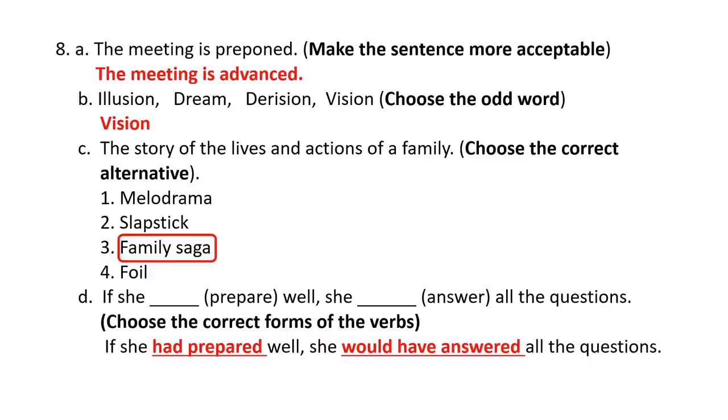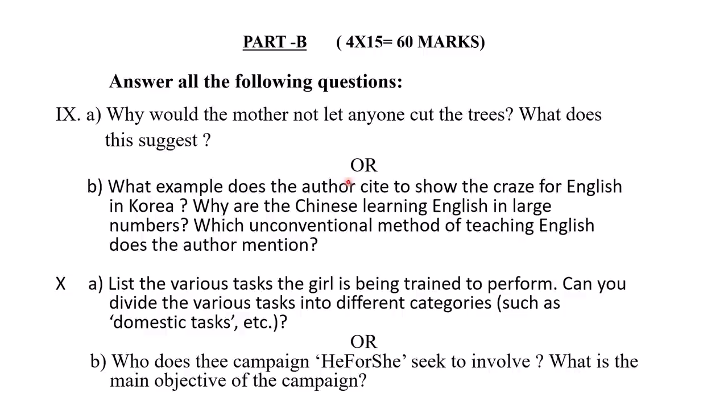So these are the eight questions from Section A — you are supposed to answer any five. Let us move on to Section B. You have to answer four questions with an internal choice; each question carries 15 marks, making Section B a 60-mark paper.